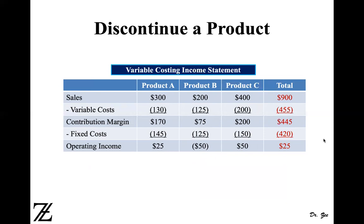We create a total column by adding up all three products. Total sales are $900, all variable costs total $455, so contribution margin is $445. All fixed costs total $420, giving a total company profit of $25. As you can see, the $50 profit from Product C and the $50 loss from Product B cancel out, leaving $25. Now let's see what happens when we eliminate Product B.